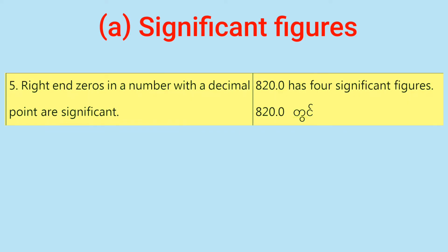Rule number 5: Trailing zeros in a number with a decimal point are significant. Trailing zeros in a number with a decimal point are significant.